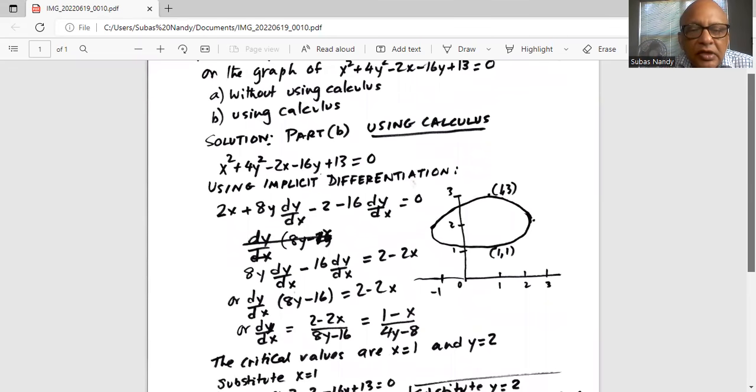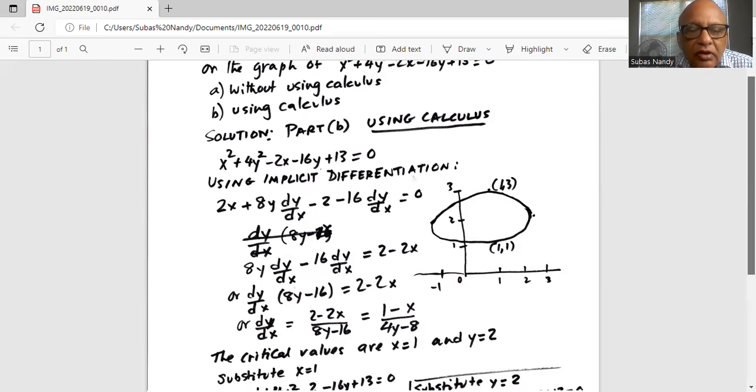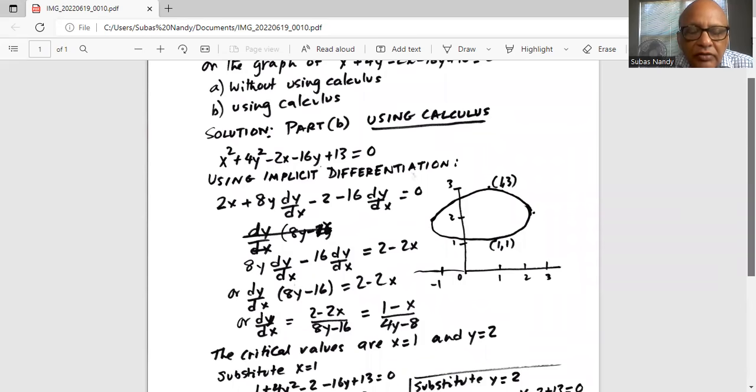Now you separate the terms containing dy/dx, keep it on the left hand side of the equal sign, and the other terms go on the right hand side. So you have 8y dy/dx minus 16 dy/dx = 2 - 2x. From the first two terms on the left hand side, we take dy/dx common outside the parenthesis. We get dy/dx (8y - 16) = 2 - 2x.